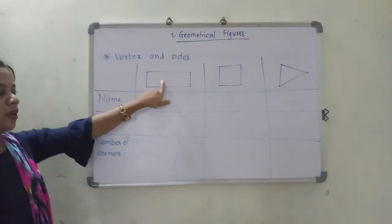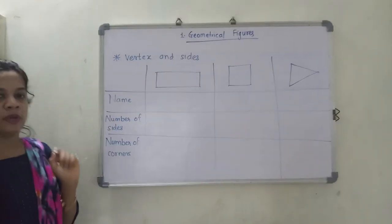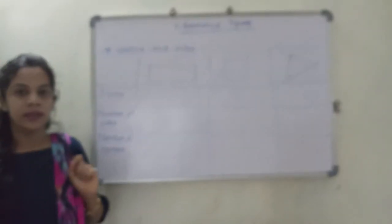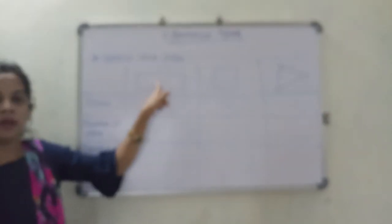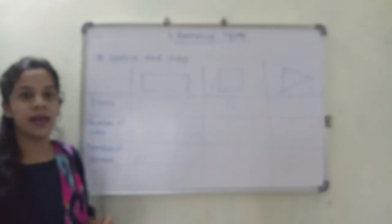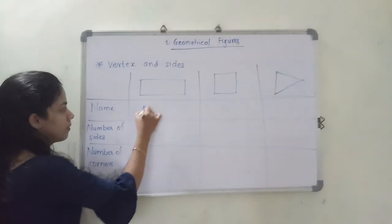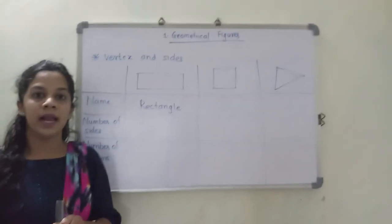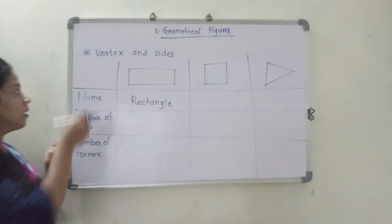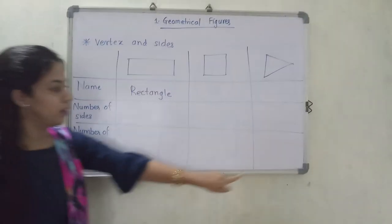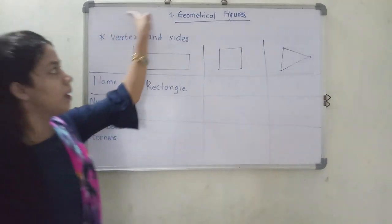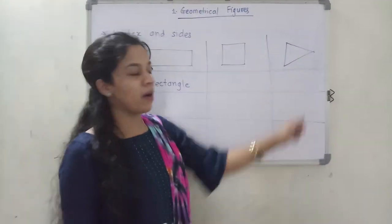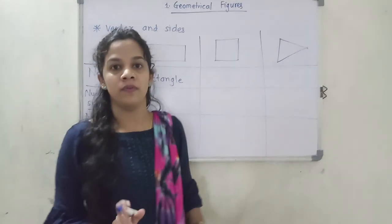In this picture, can you tell me what is the name of this figure? Yes, you are familiar with the geometrical figure - this is called a rectangle. Here is one concept for you: sides. This one is one side, this one is one side, the upper one is one side, and this part is also called one side.